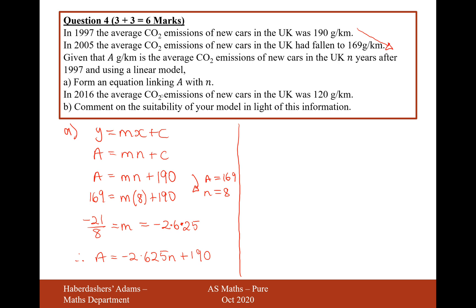In 2016, the average CO2 emissions of new cars in the UK was 120 grams per kilometre — that was a big improvement. Comment on the suitability of your model in light of this information. So what would n be? That would be 19 years after 1997. So let's work out the right-hand side of the linear model: minus 2.625 times 19 plus 190, which gives 140.125.